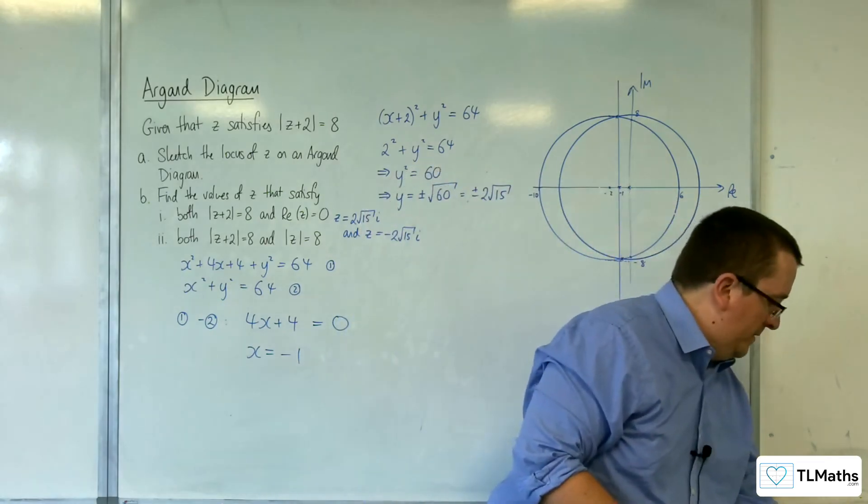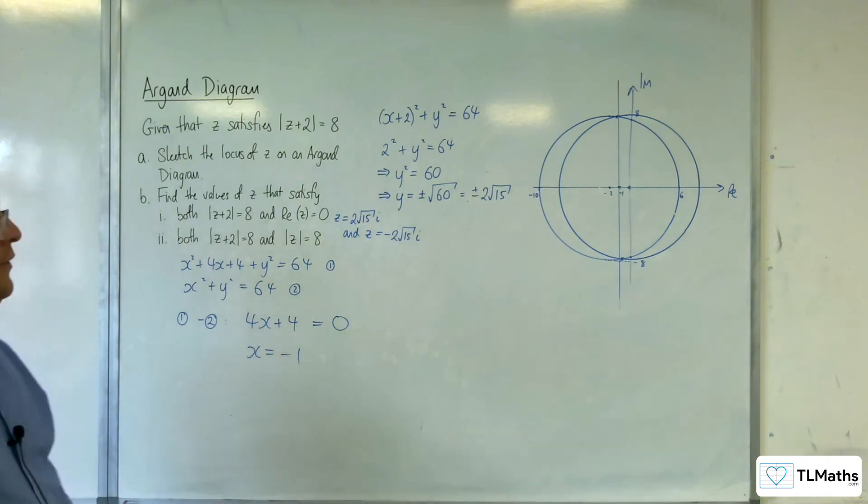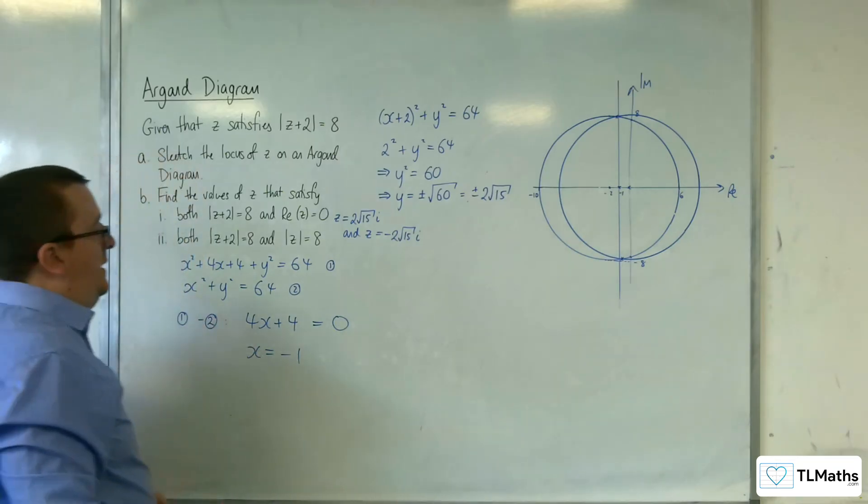See, even with my board compass, it didn't get it perfectly. OK. So, I know the x coordinate of those two points. I just need to find the y coordinate. So, I can substitute x equals minus 1 into this.